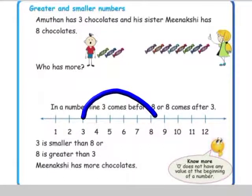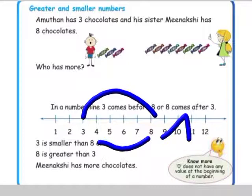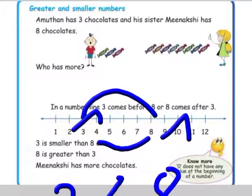8 comes after 3. So 8 is a big number and 3 is a small number. So 3 is smaller than 8. How to write this? 3 is smaller than 8 and 8 is greater than 3. So Meenakshi has more chocolates.